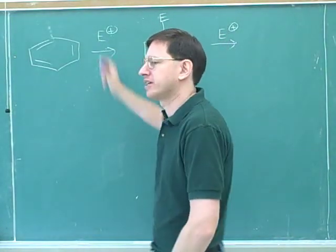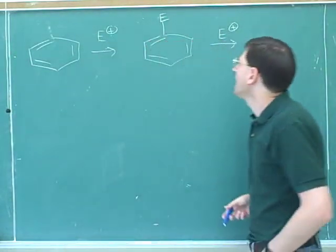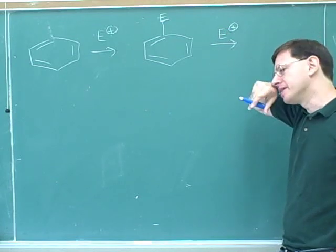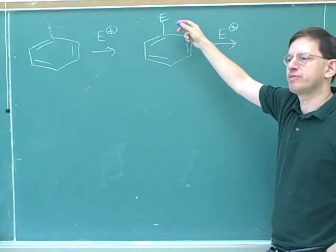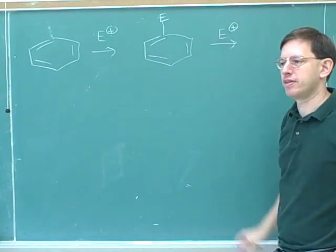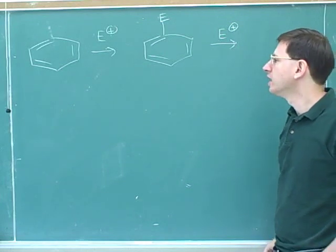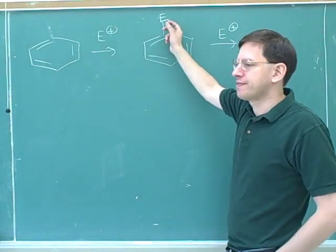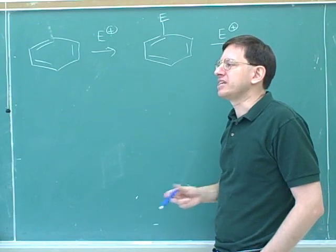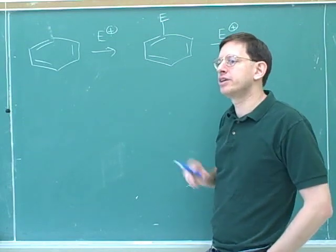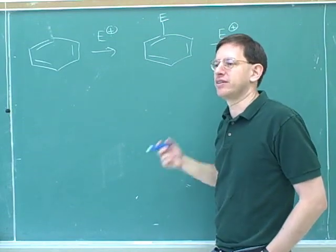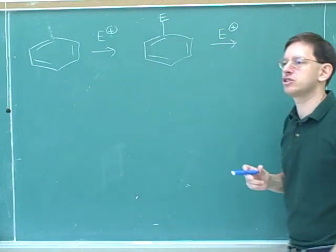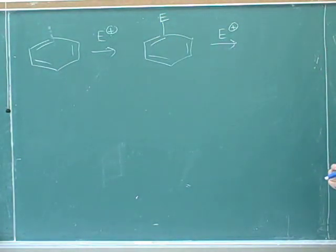We've done one electrophilic aromatic substitution, and now we're considering putting another electrophile on. This might be the same type of electrophile as before, or it might be different. It doesn't matter whether they're the same or different. After we've added the first electrophile, will it be easier or harder to add the next electrophile? That's our key issue.